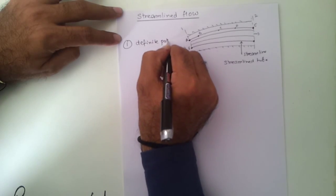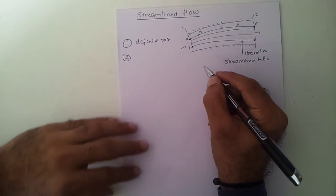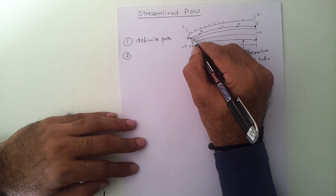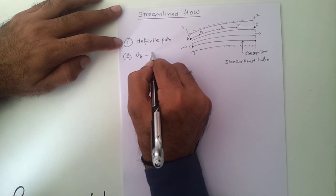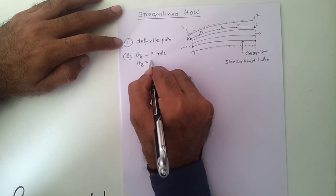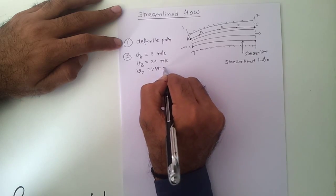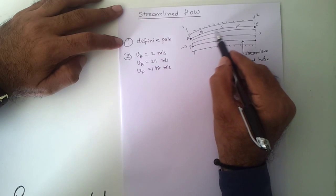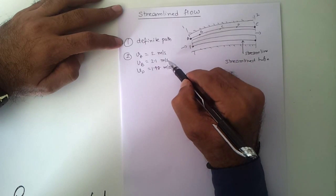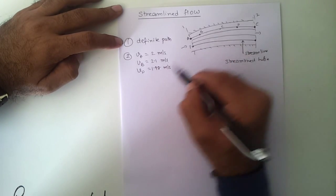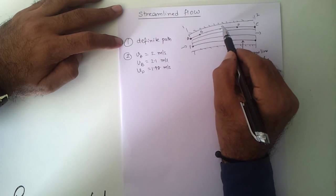The second aspect of streamline flow is that the velocity of the particle at different locations may be different, but it is constant at each location. For example, the velocity at A may be 2 meters per second, at B it may be 2.1 meters per second, and at D it may be 1.98 meters per second. Every particle arriving at A will have 2 m/s, and when it reaches B it will have 2.1 m/s.